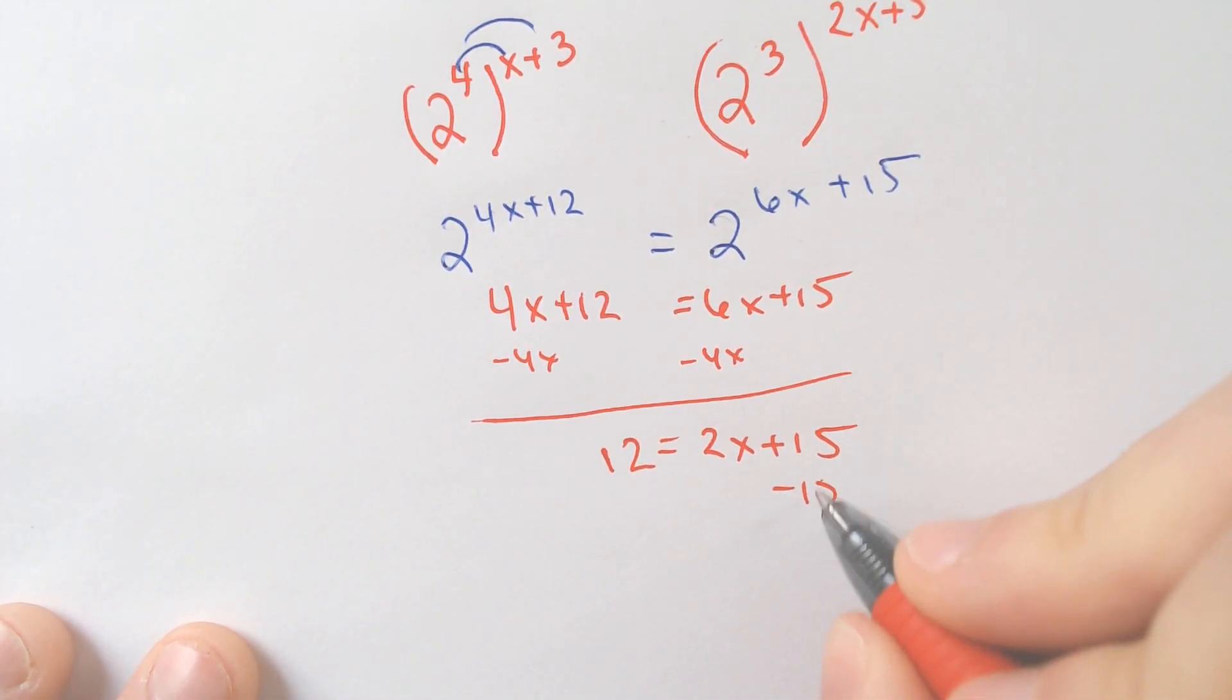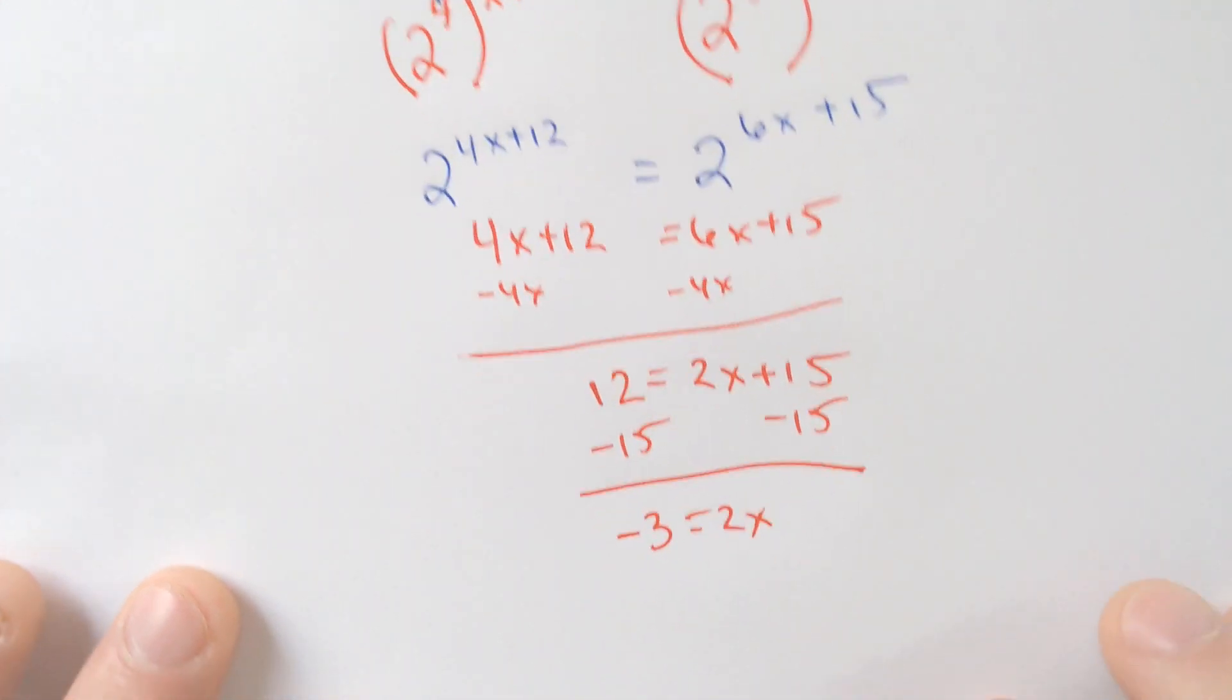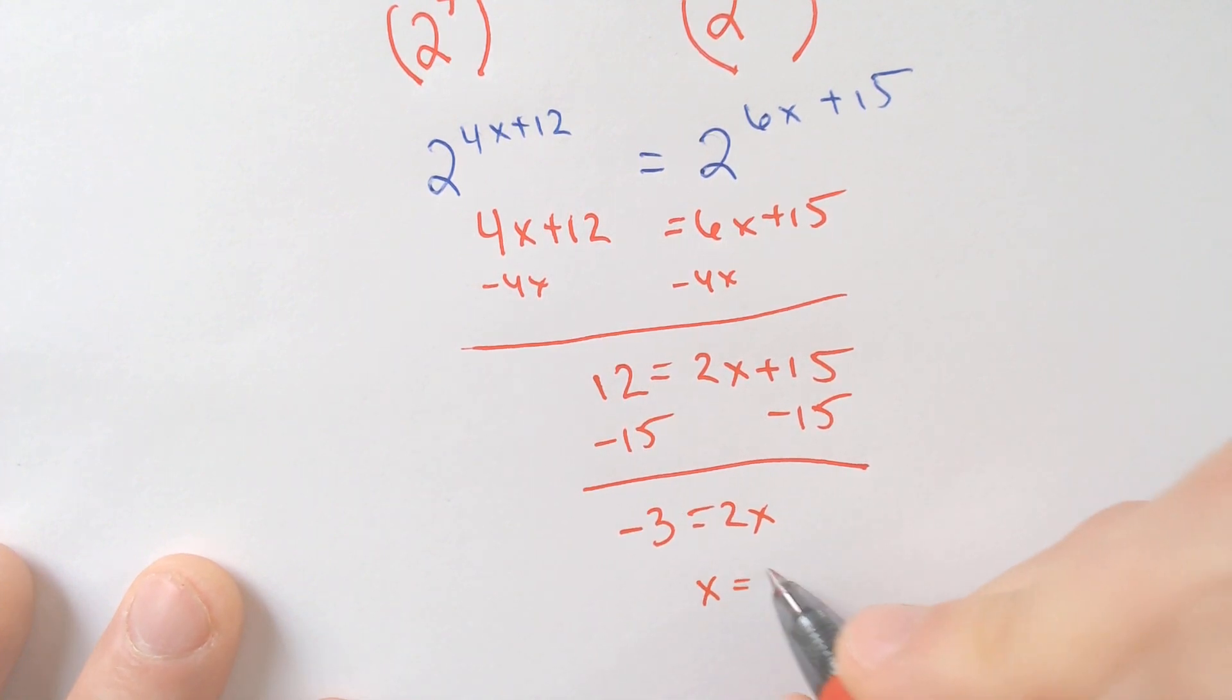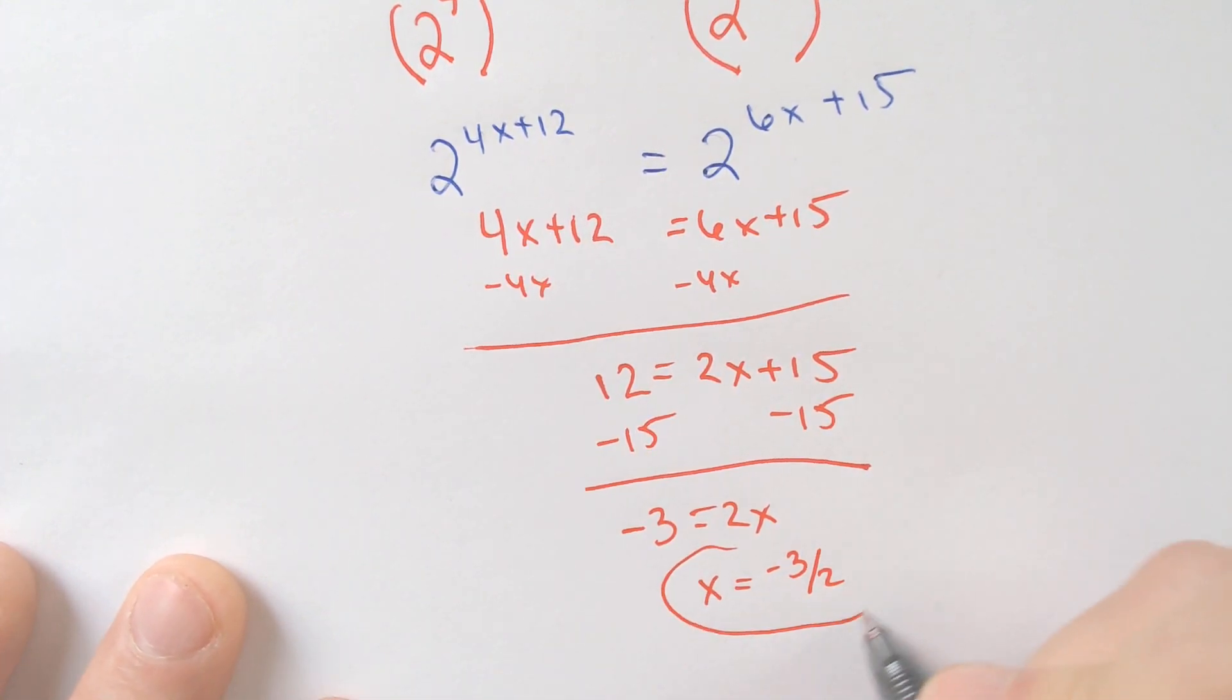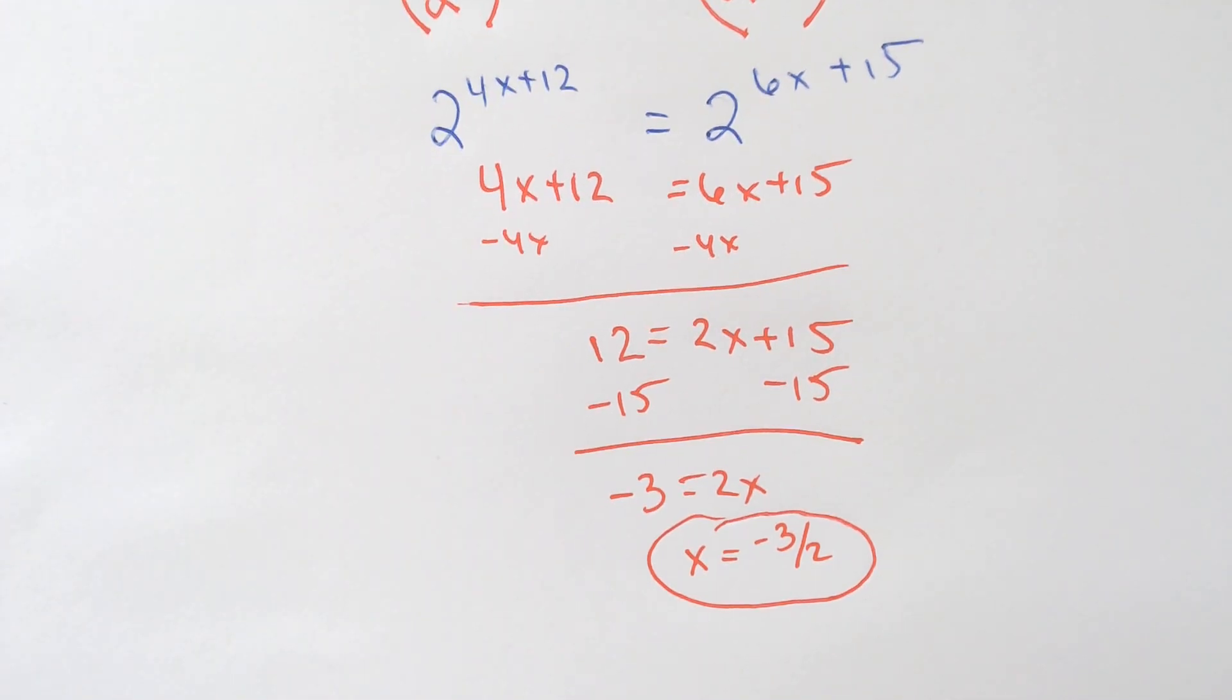Subtract 15. Negative 3 would equal 2x. And divide and get x is equal to negative 3 over 2. You do not want to write the decimals for these because the answers are going to be the fraction, regardless of what that fraction might be.